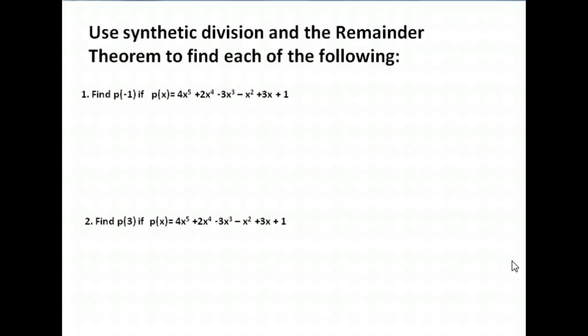So on your assignment, you will have some questions that look similar to this that ask you to use synthetic division and the remainder theorem to find each of these following things. So they want us to find p of negative 1. If we were to use synthetic division and the remainder theorem, that told us that instead of plugging negative 1 in for x, we can also find the answer by doing synthetic division with negative 1 and our polynomial. So I write down the coefficient. Everything is there, so I don't have to put any zeros in.